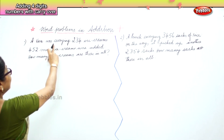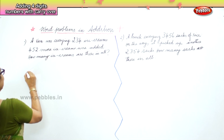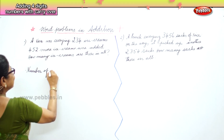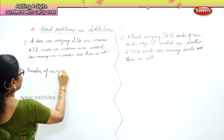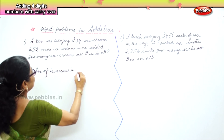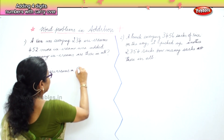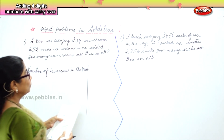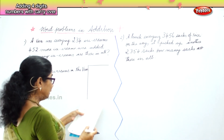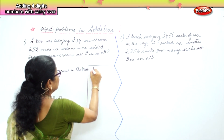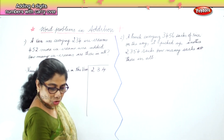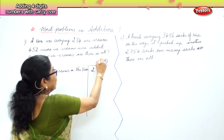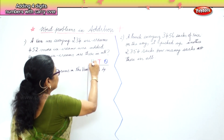So now let's write the statement. Number of ice creams in the van — that's the first statement. Now we have a margin. What is the number of ice creams? The number of ice creams is 234. And what will we write on the top so that we do not make a mistake? Tens and hundreds.